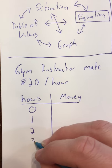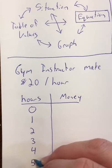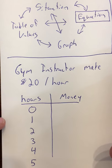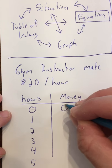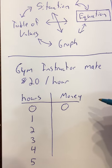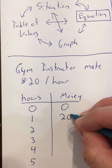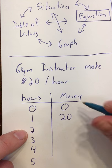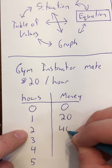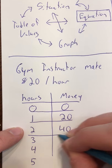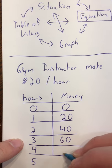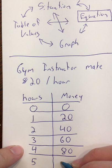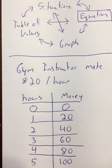We need to decide how much she'll make if she works zero, one, two, three, four, or five hours. Zero hours times $20 is zero dollars. One hour is $20. Two hours is $40. Three hours is $60. Four hours is $80. Five hours is $100.